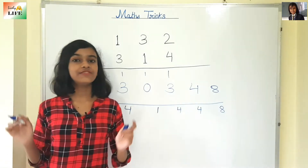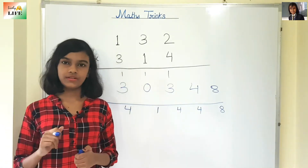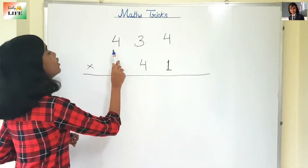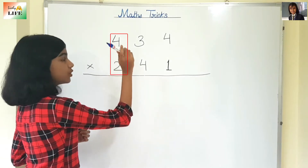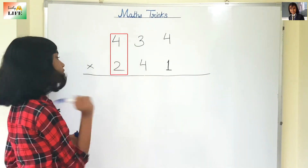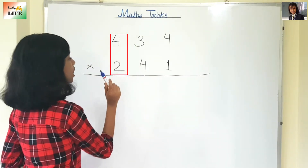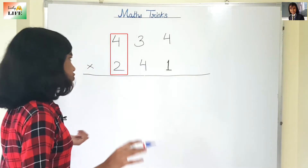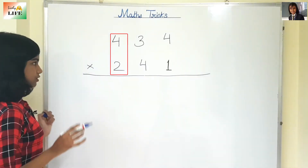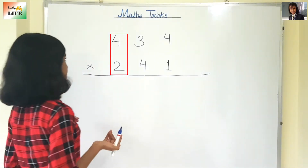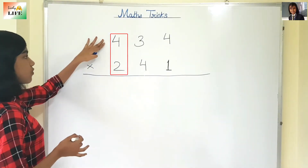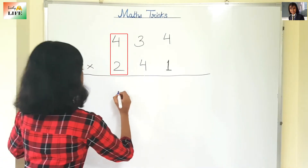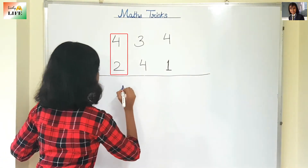So now let's solve another one. You can see the problem: 134 times 241. Let's do it in the same process — with the trick. So first: 4×2 is 8.